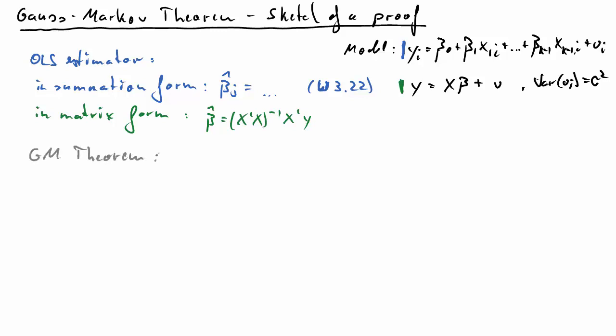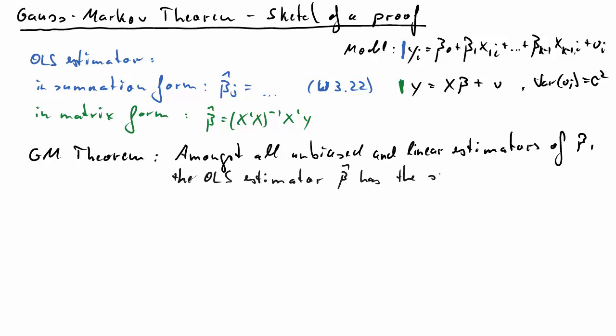And that's one reason why we prefer the matrix form. The Gauss-Markov theorem now states that amongst all unbiased and linear estimators of beta, the OLS-estimator beta hat has the smallest variance.